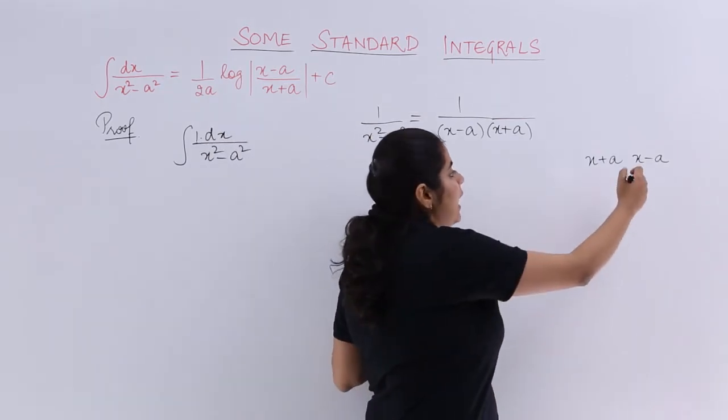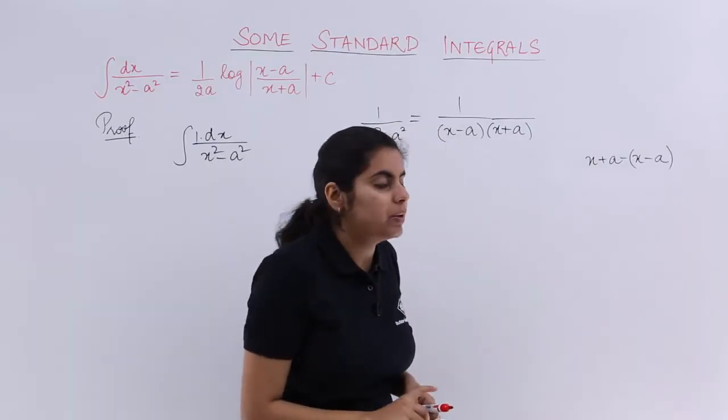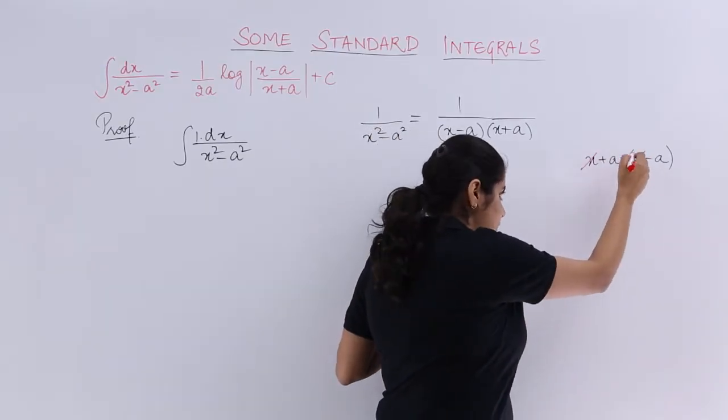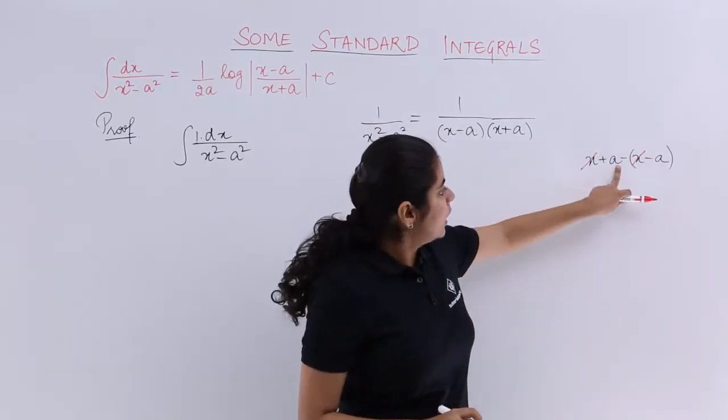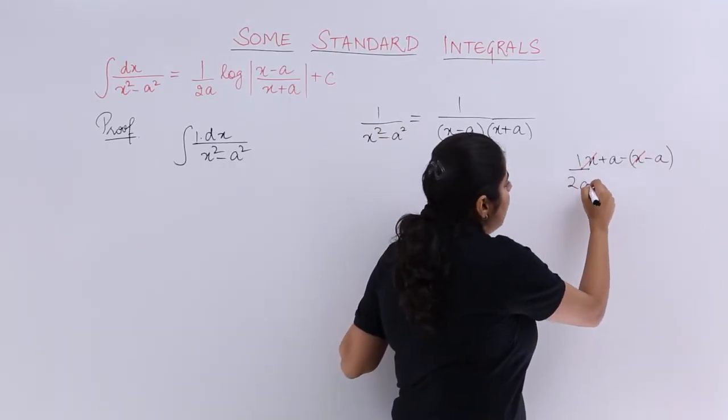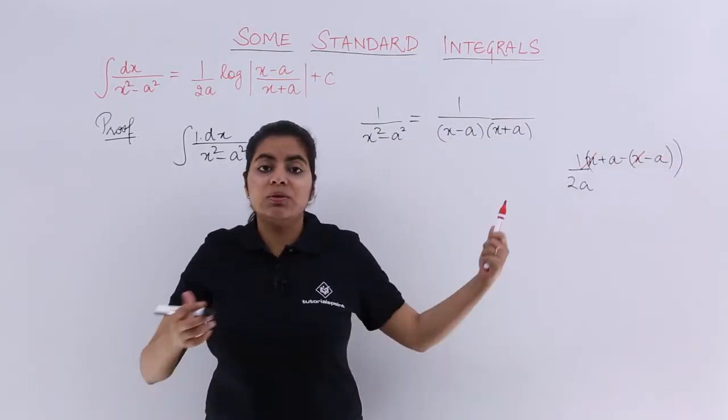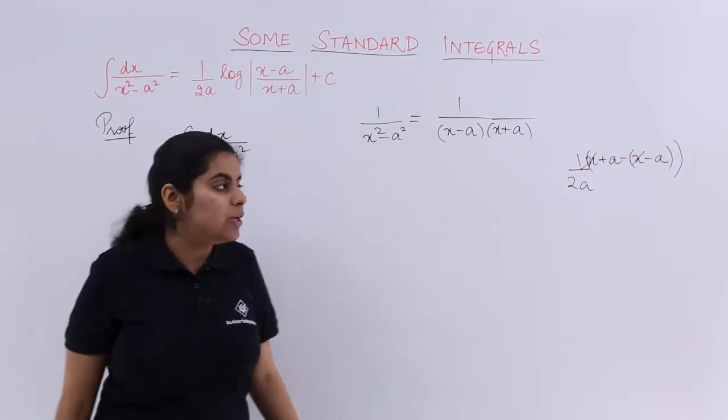How do I get it? If I subtract these 2 things, then what will happen? x will get cancelled with minus x, a plus a will become 2a, and then if I divide by 2a, does it not become 1? So that thing I will be using.